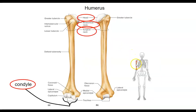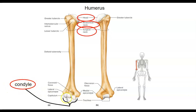Now let's look at some long bones. Here's the humerus. The humerus has a head made out of articular or hyaline cartilage. It has what's called the anatomical neck, and also the surgical neck — the surgical neck is the frequent site of fractures. And then at the distal end, this articular cartilage surface is called the condyle.